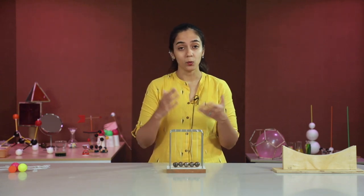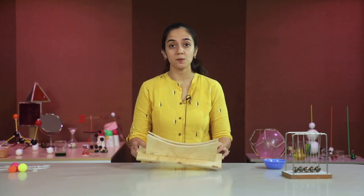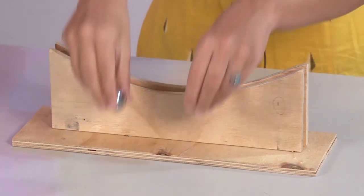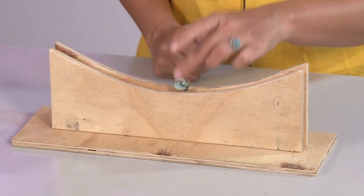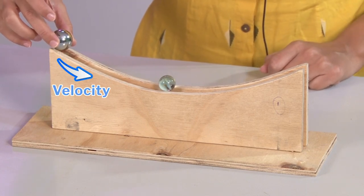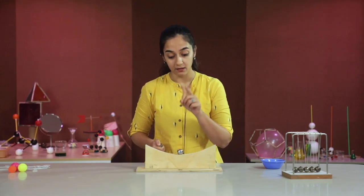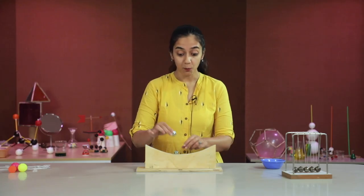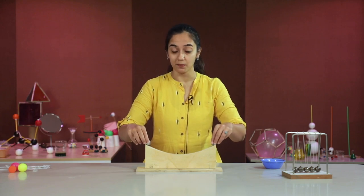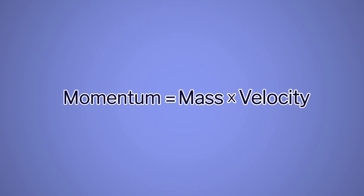Now what will happen if we vary the size of the balls? Let's find out with another variant of Newton's cradle. Here is a setup with a marble and a metal ball. If the lighter mass is stationary and the heavier mass has a certain velocity, it drags the lighter mass along with itself. If the roles are reversed and the heavier mass is stationary while the lighter one has a velocity, it barely pushes the heavier mass. Now if both have the same velocity, the lighter mass gets pushed out. Momentum of an object is due to its motion — if velocity is zero, momentum will also be zero.